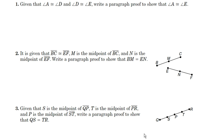Let's go to our last one, number three. Given that S is the midpoint of segment QP, T is the midpoint of segment PR, and P is the midpoint of ST, write a paragraph proof to show that QS equals TR. Well, P is the midpoint of QR, so that means QP is equal to PR.